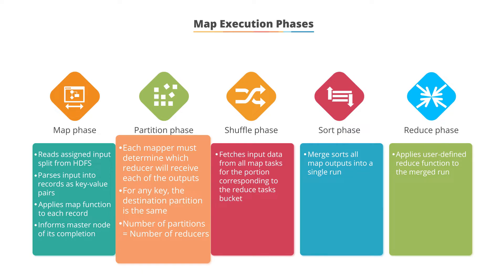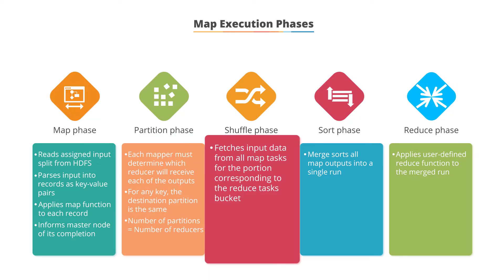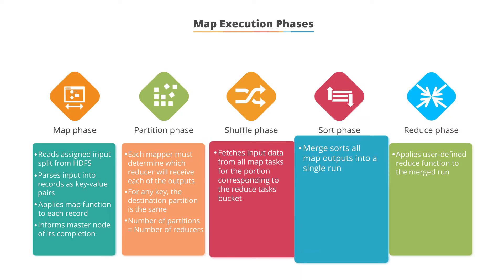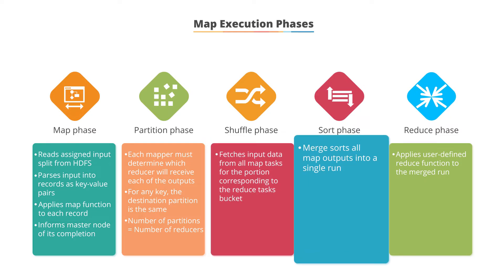Note that the number of partitions will be equal to the number of reducers. In the shuffle phase, input data is fetched from all map tasks for the portion corresponding to the reduced task's bucket. In the sort phase, a merge sort of all map outputs occurs in a single run.